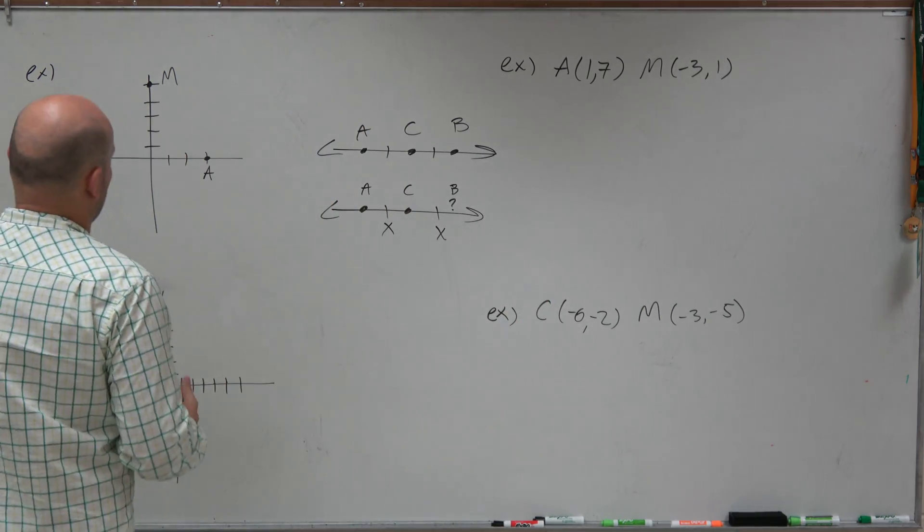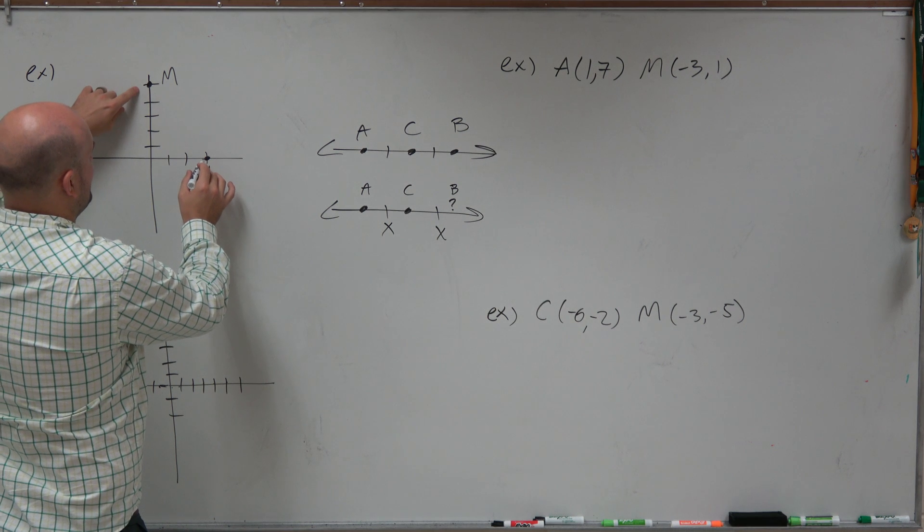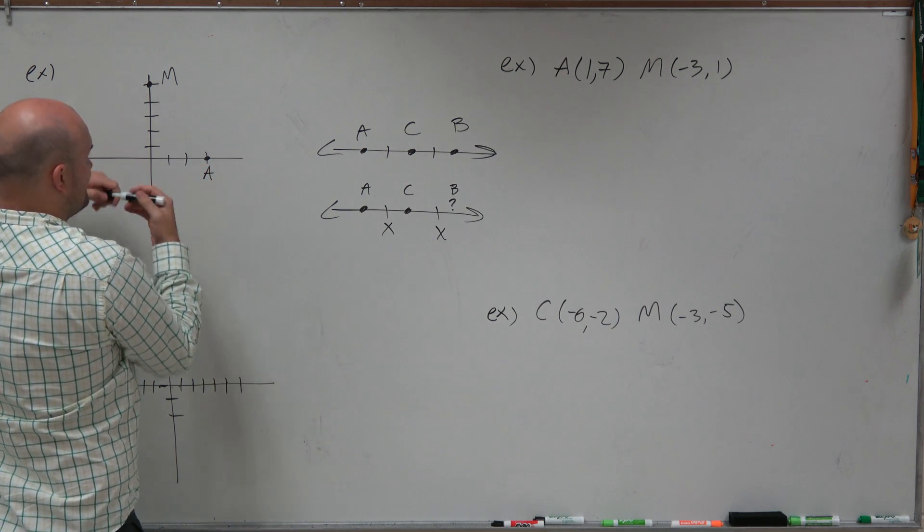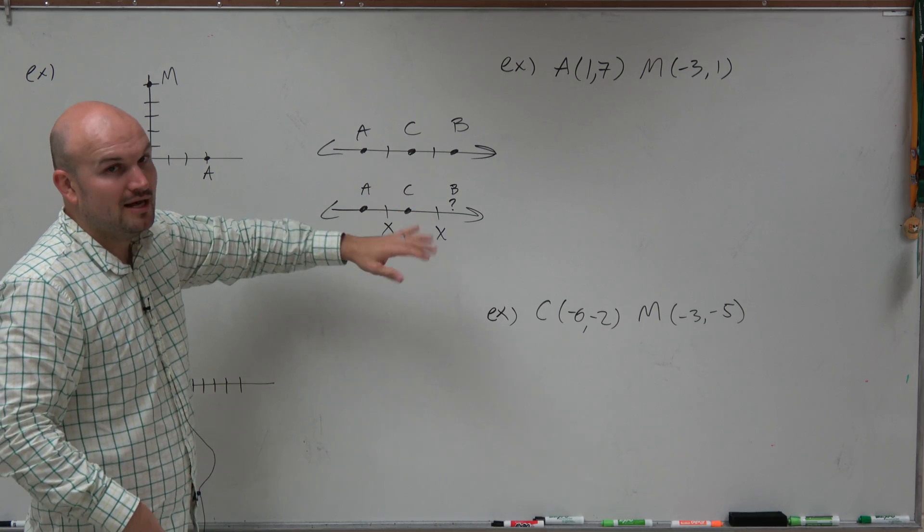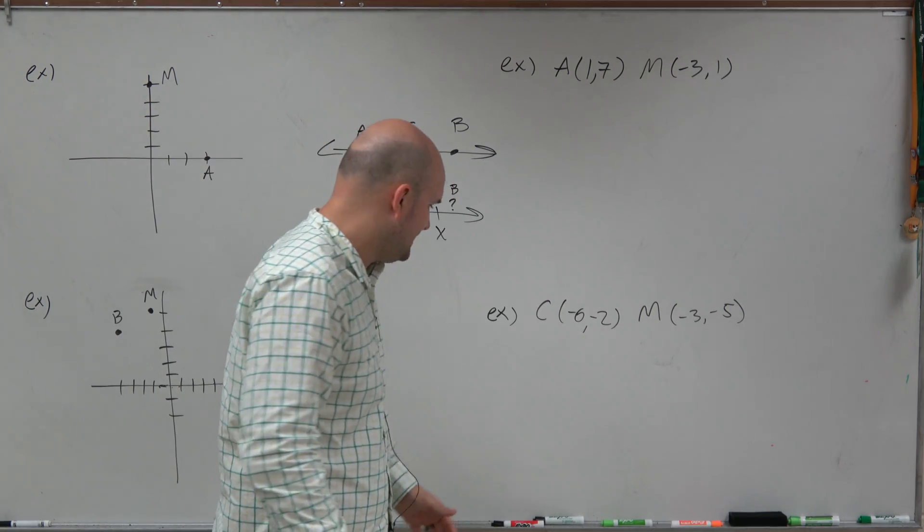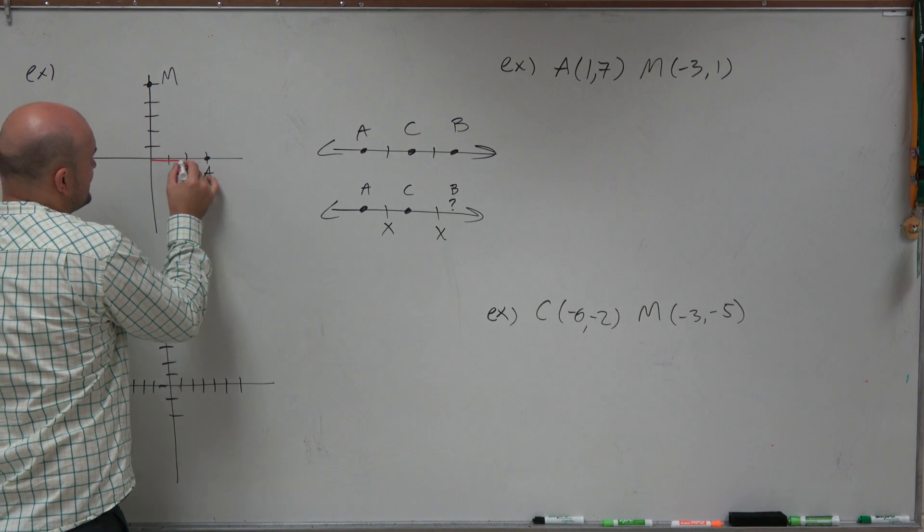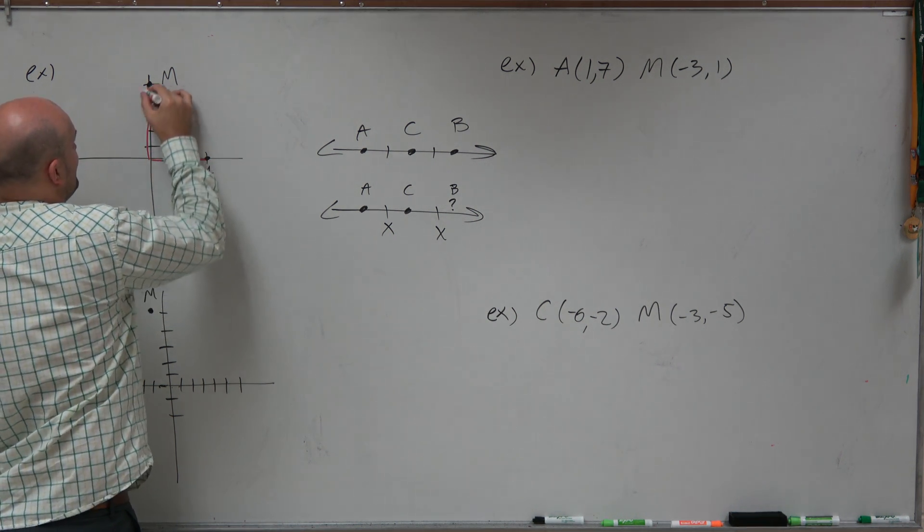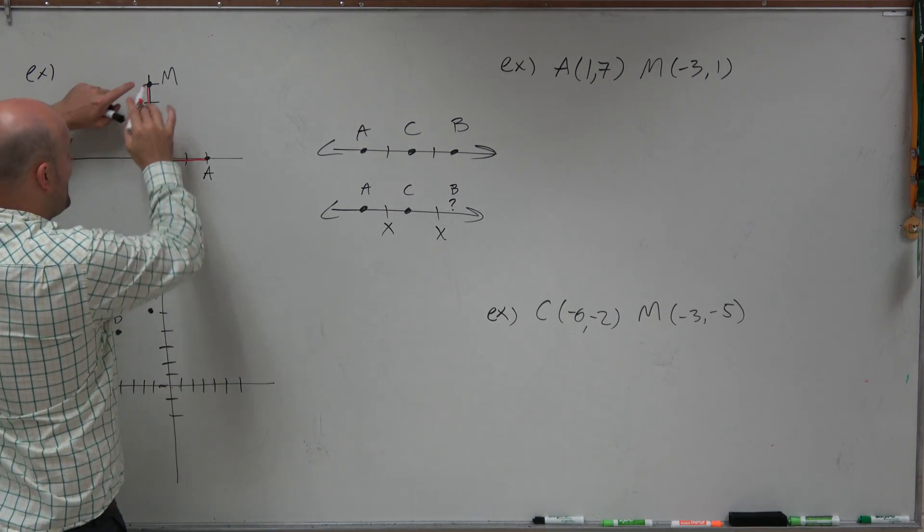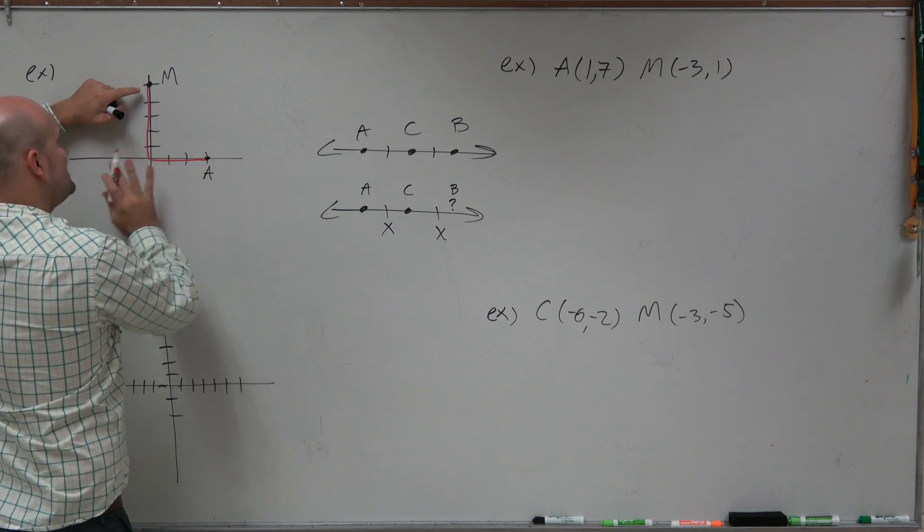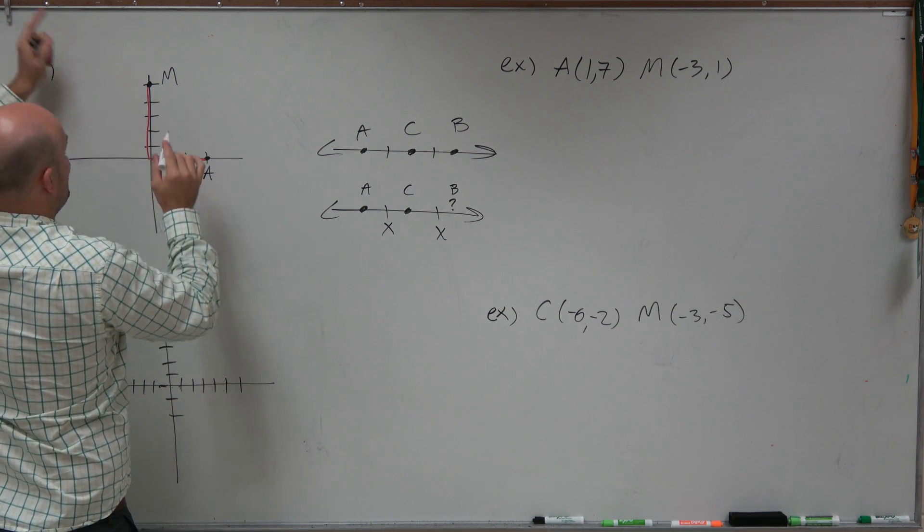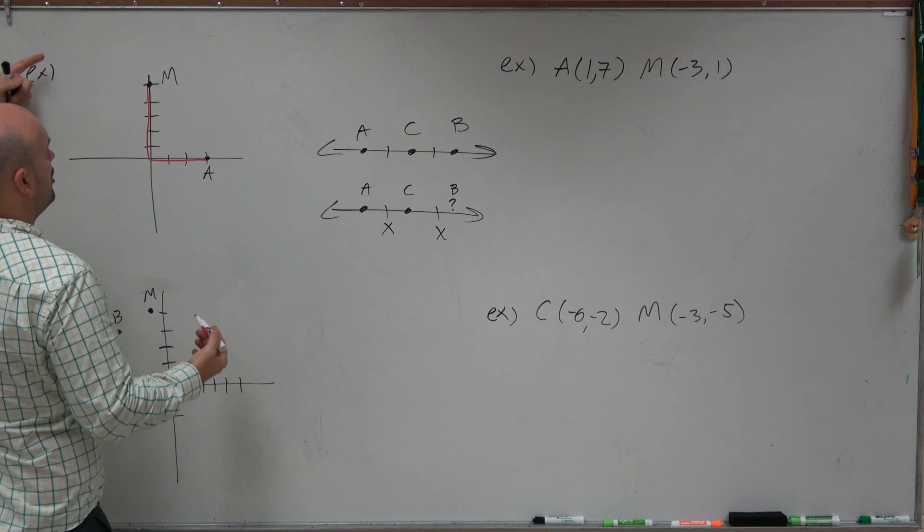When we look at the graph, we have our two points. A is an endpoint, and we have M. Now, the main thing is, when we were looking at the Cartesian coordinates, we're looking at a horizontal distance and a vertical distance. If M is the midpoint, that means horizontally, that's in the middle between A and my other point, which we'll call B.